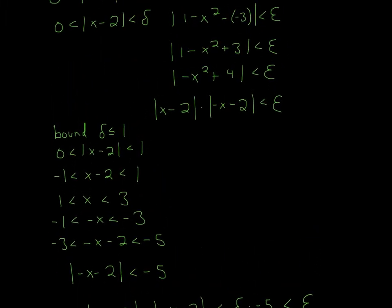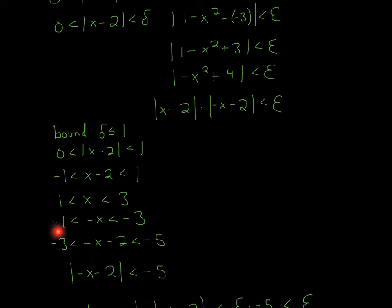Now I'm going to take x minus 2 and convert it to negative x minus 2. We start by getting rid of the 2 — add 2 to each part: we get 1 < x < 3. After that, since we want a negative x, we multiply everything by negative 1, giving negative 1 > negative x > negative 3. Finally, we want a negative x minus 2, so we add negative 2 to each: we get negative 3 > negative x minus 2 > negative 5.